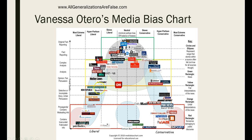Now let's look at the Huffington Post. This skews liberal, so it falls in the hyperpartisan liberal side. Then, because of the journalistic quality of the Huffington Post — which can be unfair persuasion, incomplete, or selective story — Otero classifies it in the orange zone. Sources in the orange and red zones don't do us a favor; they carry high partisan bias and lower journalistic quality.